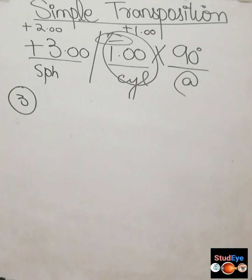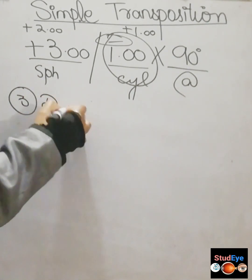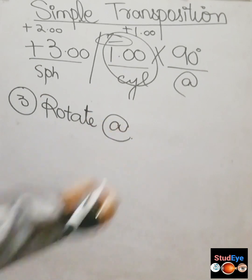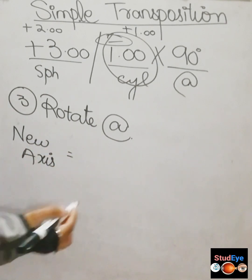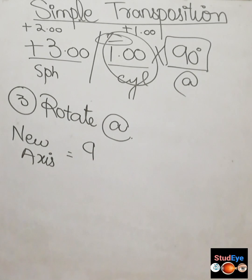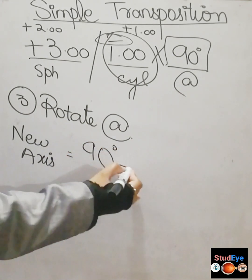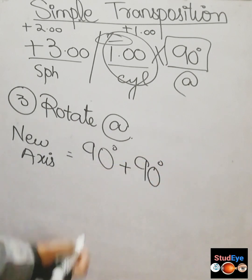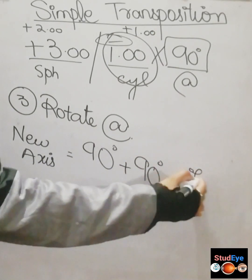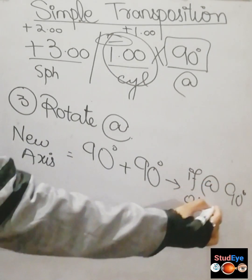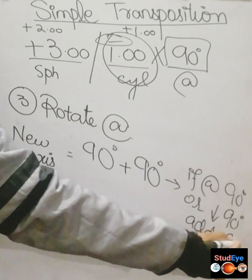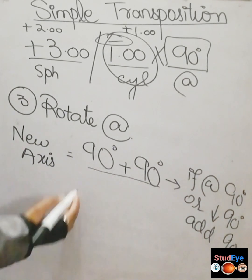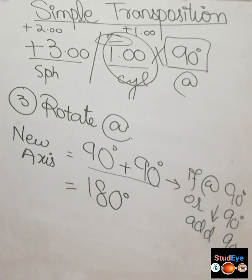Step 3 is to find the new axis by rotating the patient's axis. The original axis is 90 degrees. Since 90 degrees is equal to or less than 90, we add 90 degrees: 90 plus 90 equals 180 degrees. So the new axis of the transposed prescription is 180 degrees.